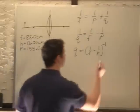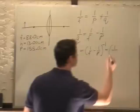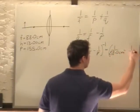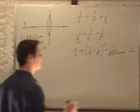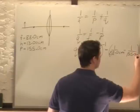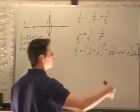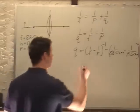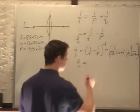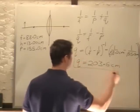So what I do is I plug in our values: 1 over our focal length of 88 cm, minus 1 over P of 155 cm. And that is inverse. So I go 1 over 88 minus 1 over 155, it gives me a number, take the reciprocal of that. That gives me a Q value of 203.6 cm.